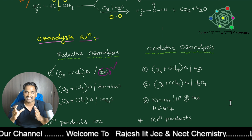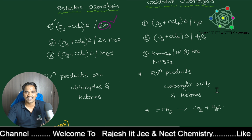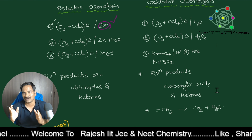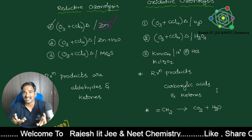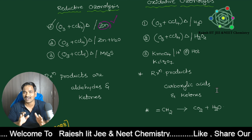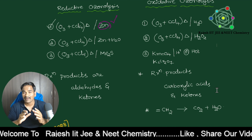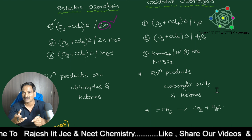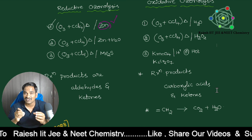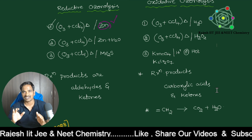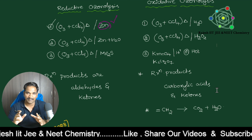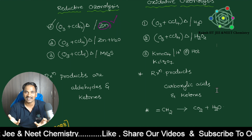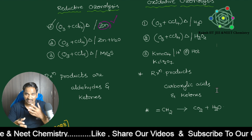The important point about products: in reductive ozonolysis, the products are aldehydes and ketones — both may be aldehydes, both may be ketones, or one of each, depending on the reactant. In oxidative ozonolysis, the aldehydes that are formed convert into carboxylic acids, while ketones are never changed — ketones remain as ketones only. This is a very important point.